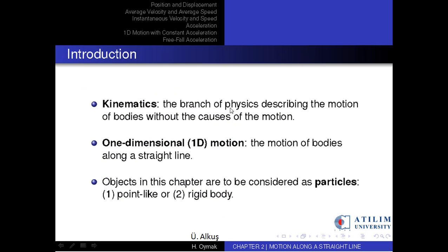The branch of physics describing the motion of bodies without considering the causes of the motion is called kinematics. In this chapter, we study only one-dimensional motion — that is, we consider the motion of bodies along a straight line. This line might be horizontal, vertical, or even slanted, but it will always be straight in this chapter.